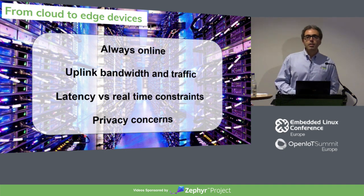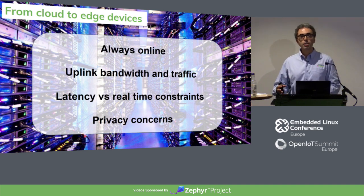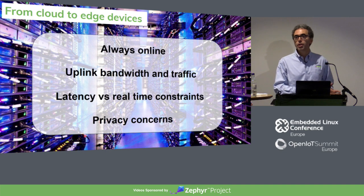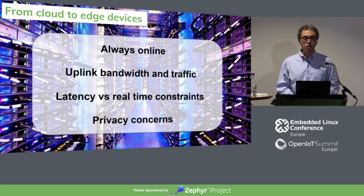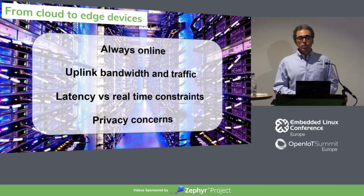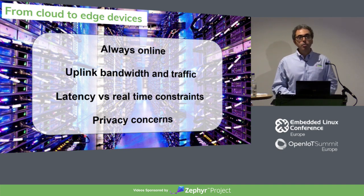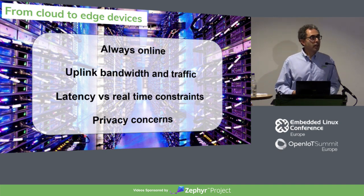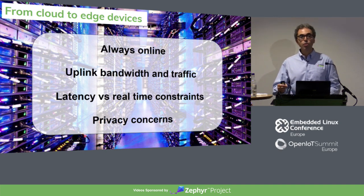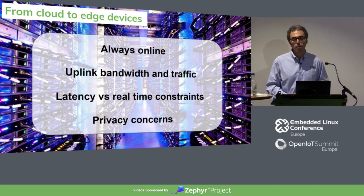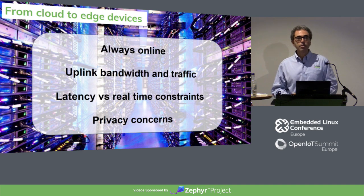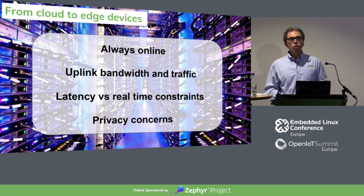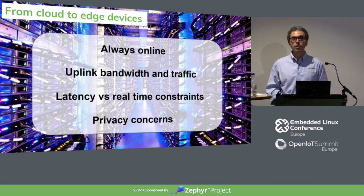With cloud-based machine learning, there are constraints we shall be aware of. You must always be online, because you are sending information to the cloud where all the machine learning magic happens. There may be constraints on uplink bandwidth and speed, and the amount of data you can upload. There can be concerns about latency — you need to detect a bolt or liquid spilling from a production line in real time, and the cloud may not be fast enough. There may also be concerns about privacy — uploading sensitive images to a cloud somewhere rather than keeping it in your offices.